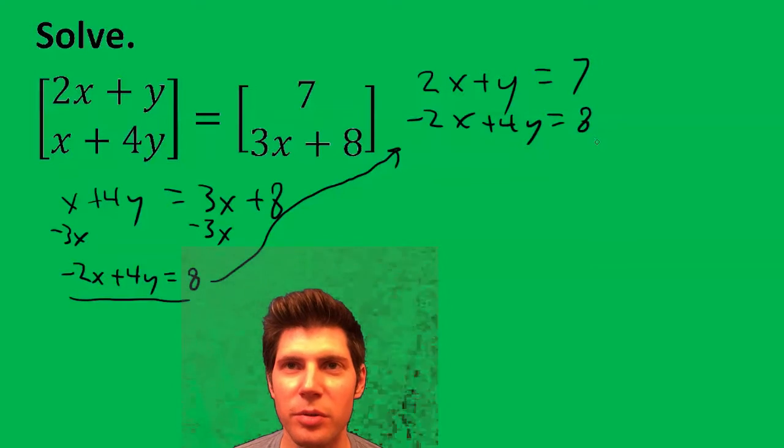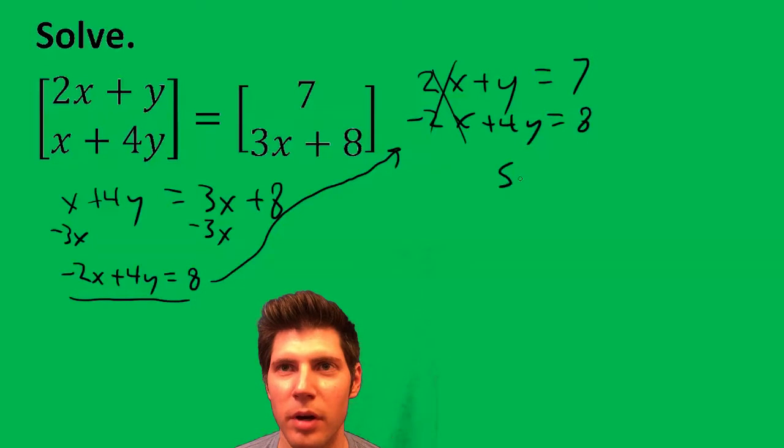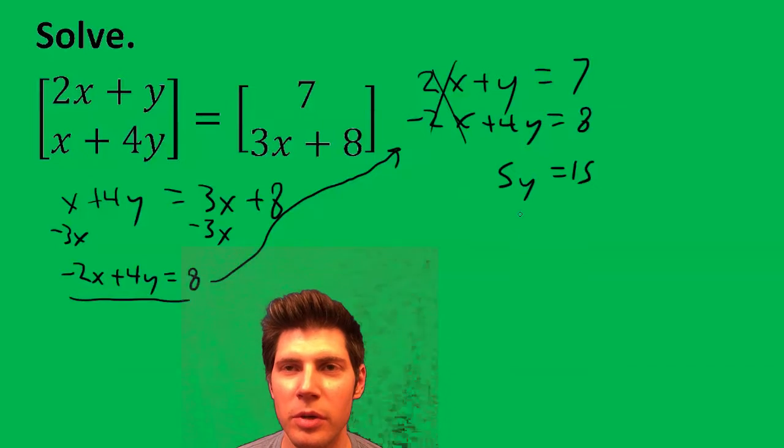Now we can add the two rows together. This cancels. We have 5y equals 15. We have y equals 3.